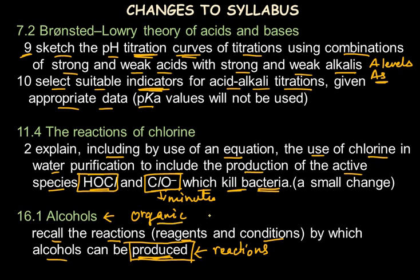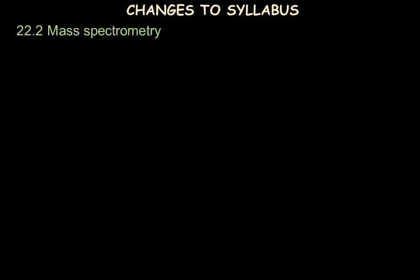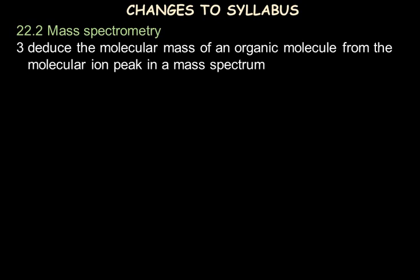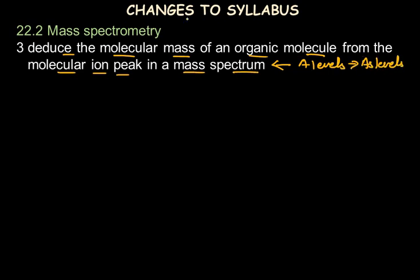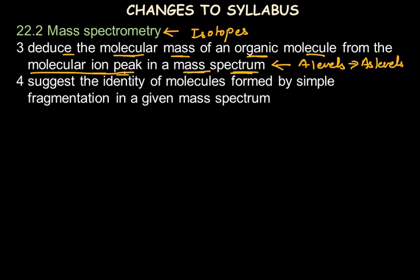The next topic added is mass spectrometry, where students are now required to deduce the molecular mass of an organic molecule from the molecular ion peak in a mass spectrum. This topic is also shifted from A-level to AS-level. Previously, mass spectrometry only included isotopes; now the mass spectrum for the molecular ion is used to deduce molecular mass, and from the molecular ion peak data, students should suggest the identity of a molecule formed by simple fragmentation in a given mass spectrum.